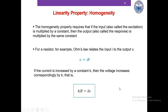The homogeneity property requires that if the input is multiplied by a constant, then the output is multiplied by the same constant. For a resistor, Ohm's law relates the input current I to the output voltage V. If we increase the current by a constant K, the voltage increases correspondingly by K. So if we increase the current 10 times, the voltage becomes 10 times. If 100 times, the voltage becomes 100 times. This is called the homogeneity or scaling property.